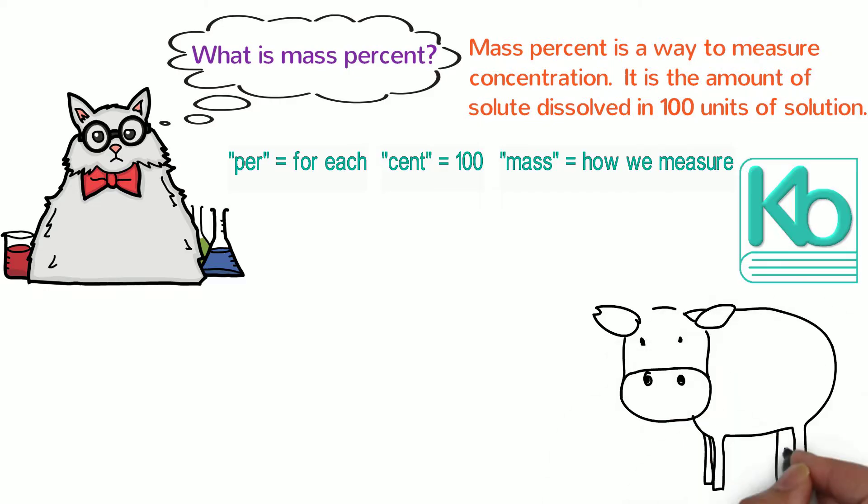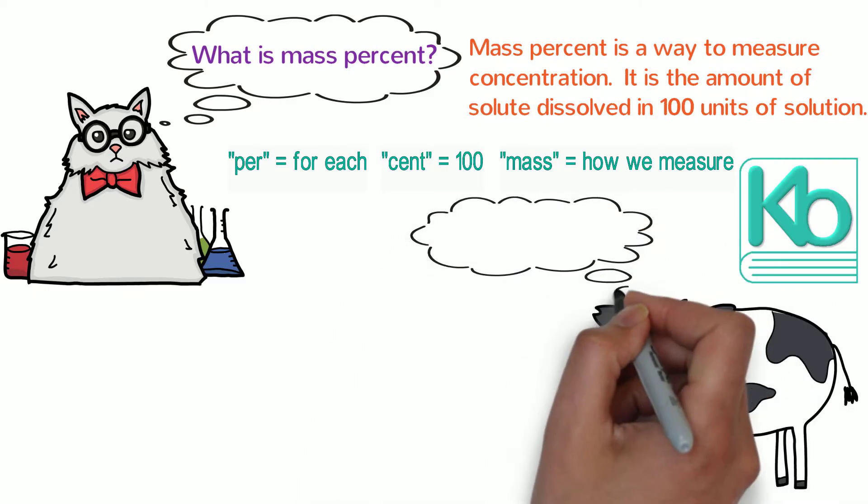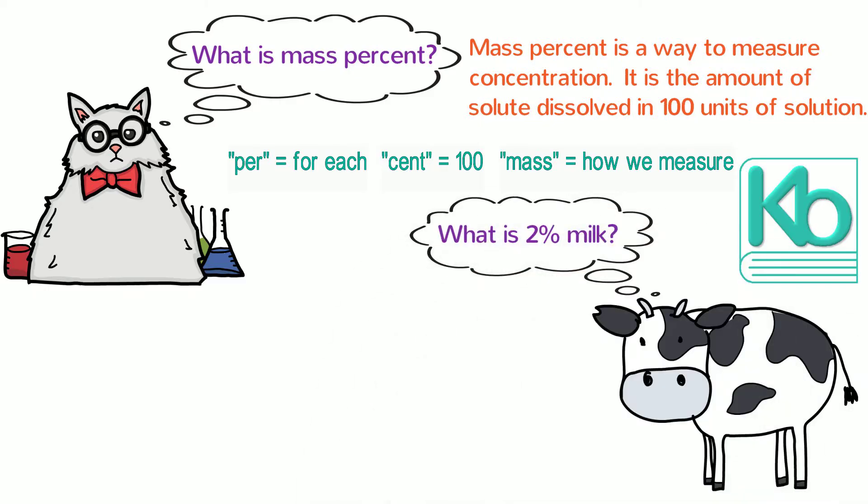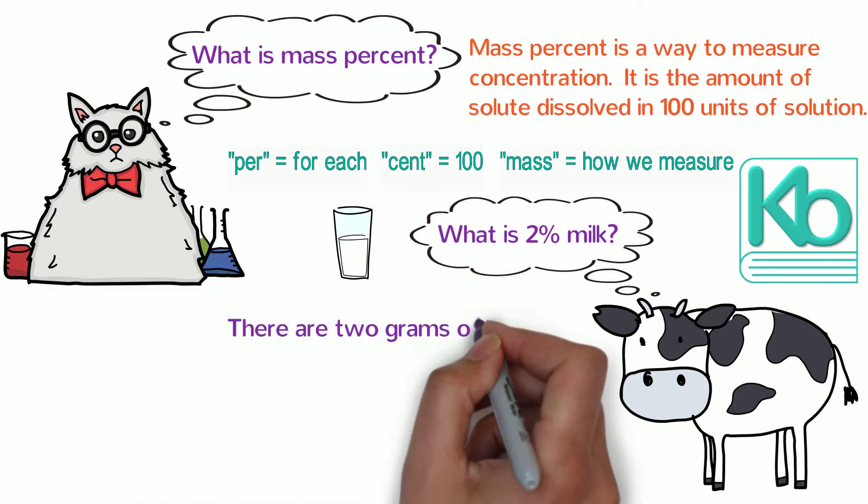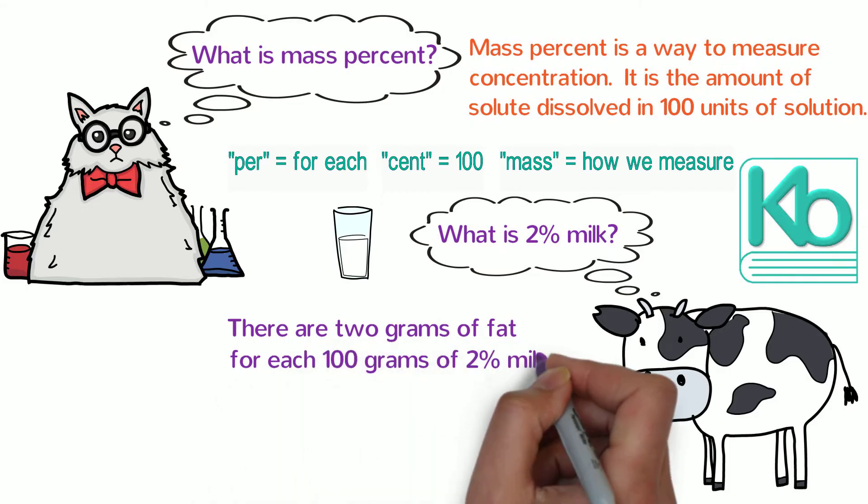For example, the fat content in milk is measured in mass percent. What is 2% milk? It means that 100 grams of that milk contains 2 grams of fat. There are 2 grams of fat for each 100 grams of 2% milk.